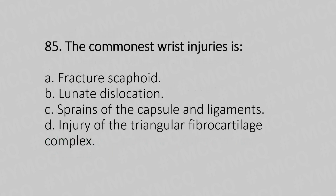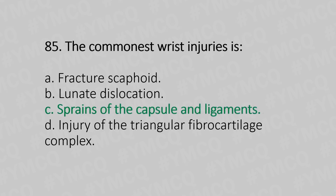Let's move to question number 85. The commonest wrist injury is: Option A, fracture of the scaphoid. Option B, lunate dislocation. Option C, sprain of the capsule and ligaments. Option D, injury of triangular fibrocartilage complex. The answer is Option C, sprain of the capsule and ligaments.